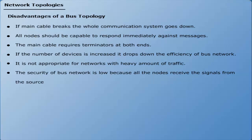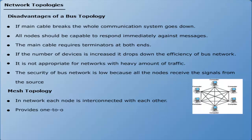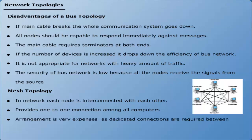Mesh topology is a network where each node is interconnected with every other node. It provides a one-to-one connection among all computers on the network. The arrangement is very expensive as dedicated connections are required between every node, resulting in many redundant connections. Mesh topology is not frequently used to develop media-based computer networks.